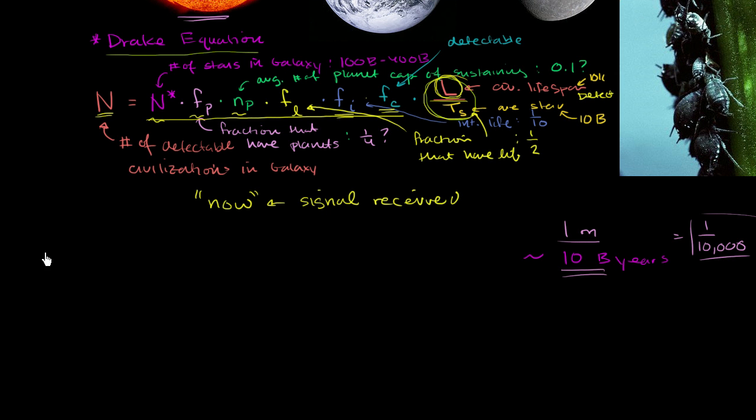So the more known Drake Equation is this. The number of detectable civilizations in the galaxy is equal to, and they'll have this. And this is not the number of stars in the galaxy. This is the average rate of star formation per year in the galaxy. So star, so let me write this down.